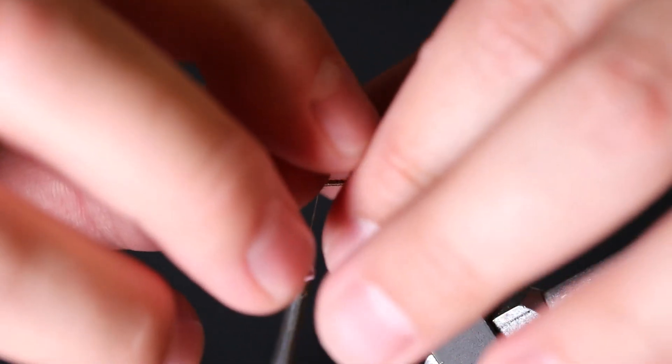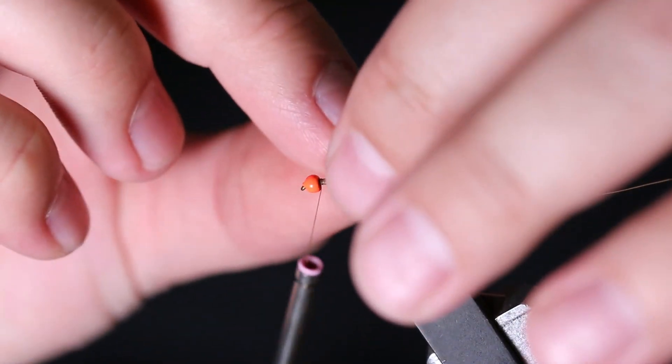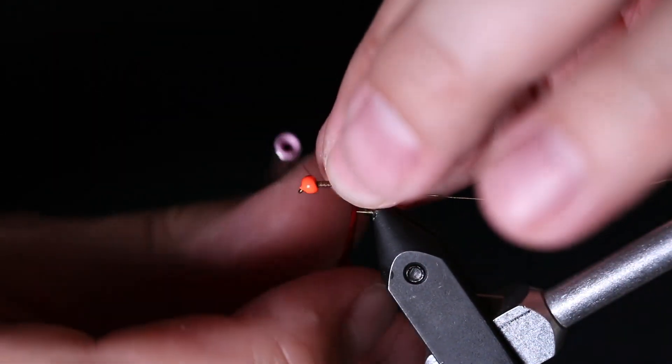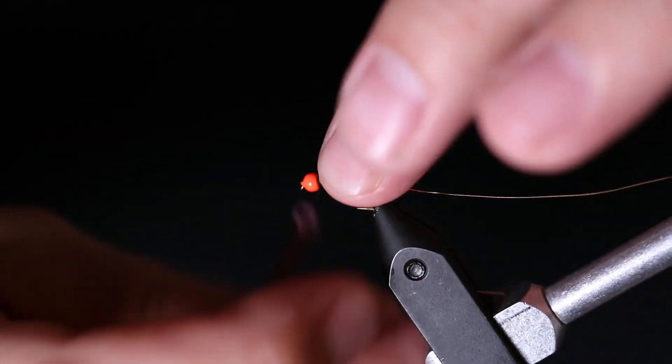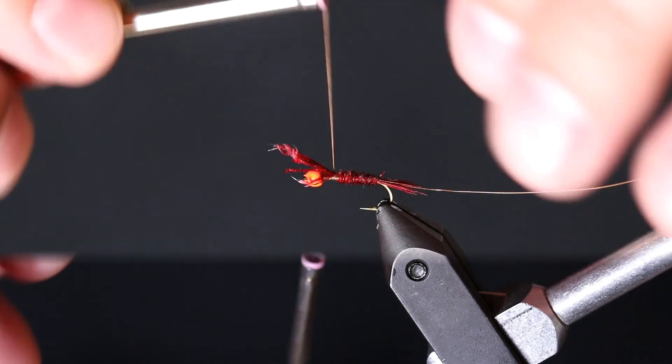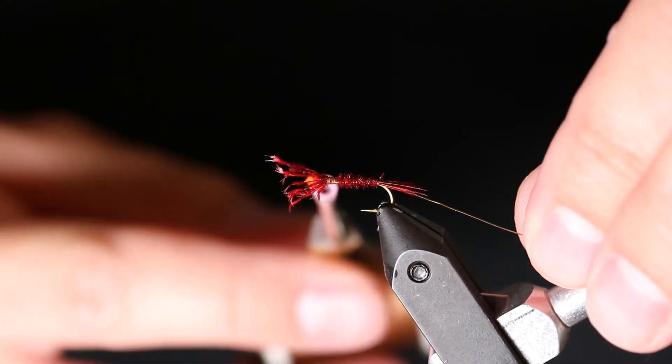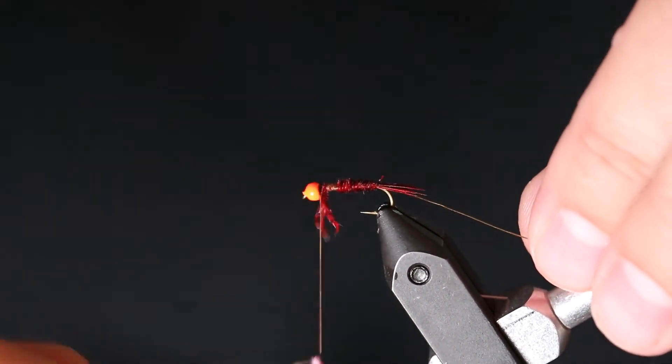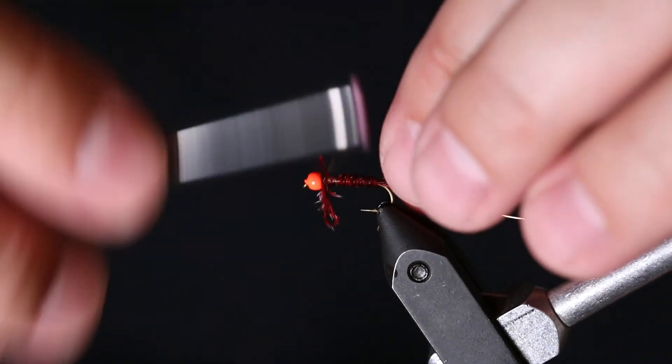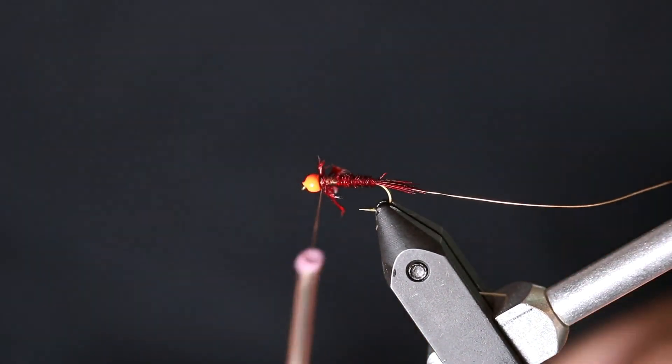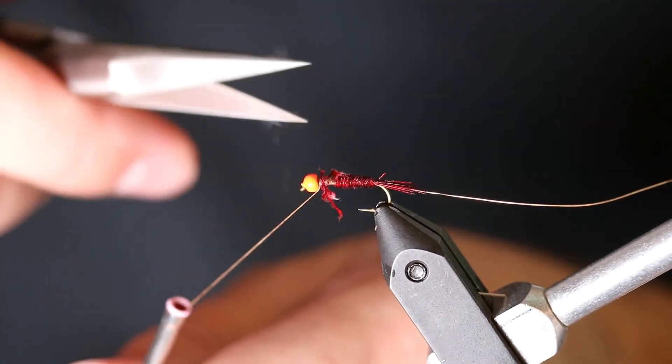From here, just wrap them up the shank of your hook. Go ahead and wrap these in, and trim out the butt ends.